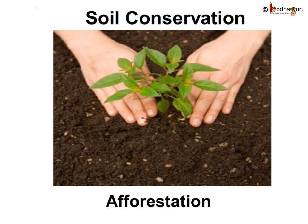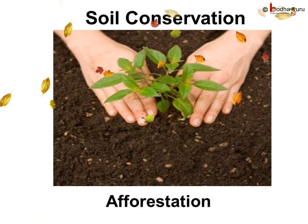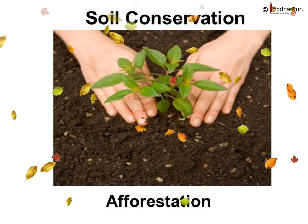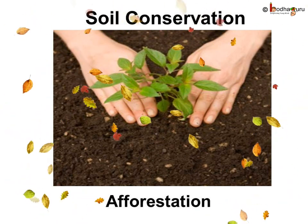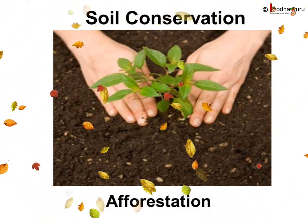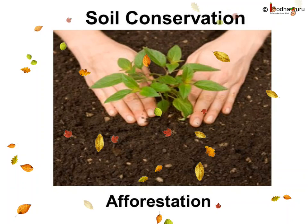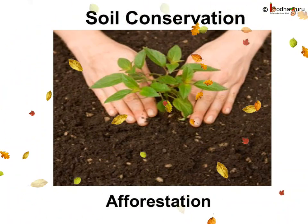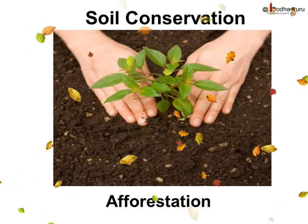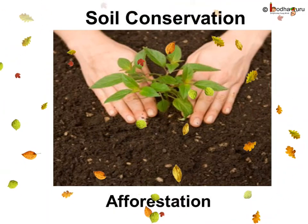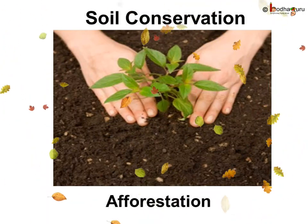So what steps should be taken to protect the soil from erosion? When the soil is protected from erosion, it is called soil conservation. Soil can be conserved by planting trees. Planting new trees to cover a large area is called afforestation.